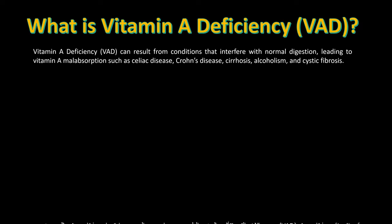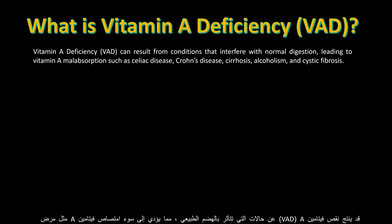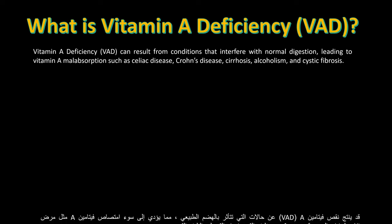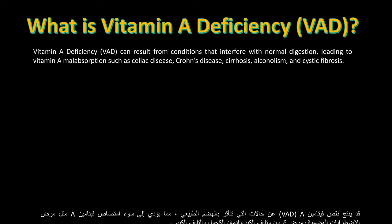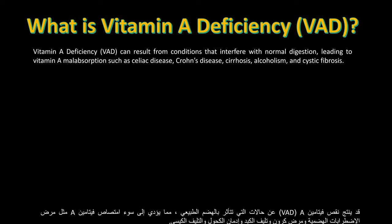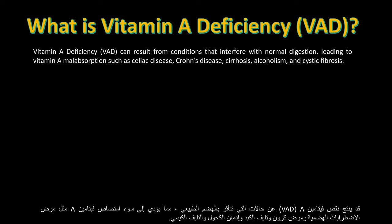Vitamin A Deficiency, VAD, can result from conditions that interfere with normal digestion, leading to vitamin A malabsorption, such as celiac disease, Crohn's disease, cirrhosis, alcoholism, and cystic fibrosis.